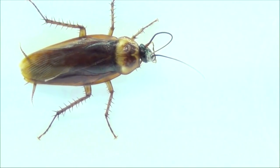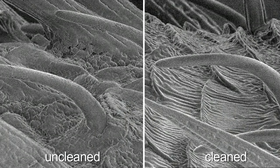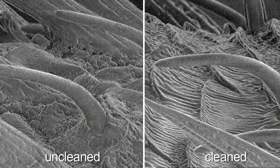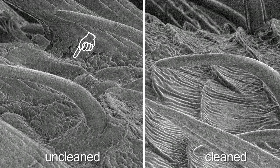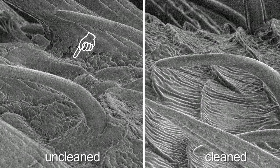And when they looked at the clean and the uncleaned antennae, we very clearly saw a huge accumulation of junk on the surface of the antennae and that junk is the cuticular hydrocarbons that are constantly excreted by the insect onto the surface.